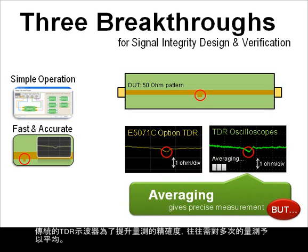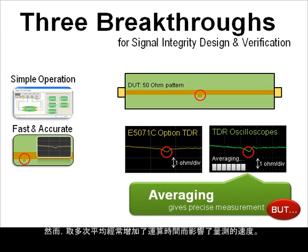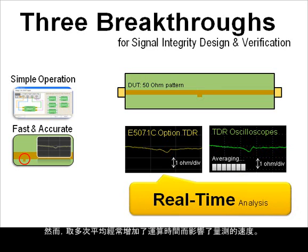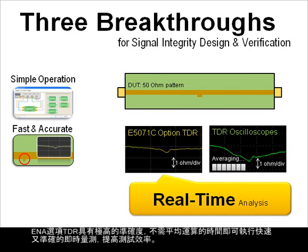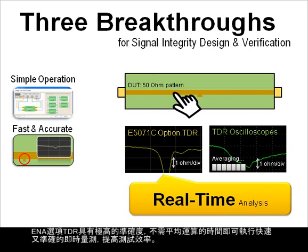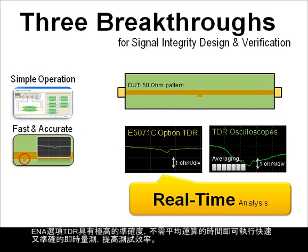On TDR oscilloscopes, averaging with multiple measurements reveals precise characteristics. However, averaging sacrifices the measurement update rate, whereas on ENA Option TDR, the instant measurement update allows you real-time analysis.